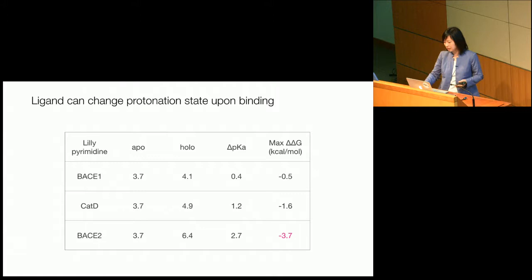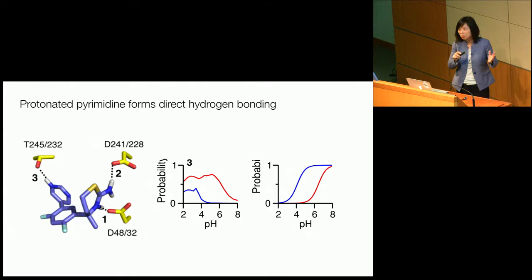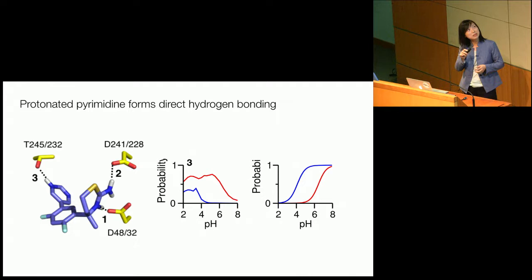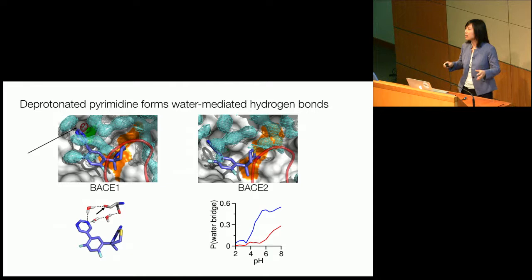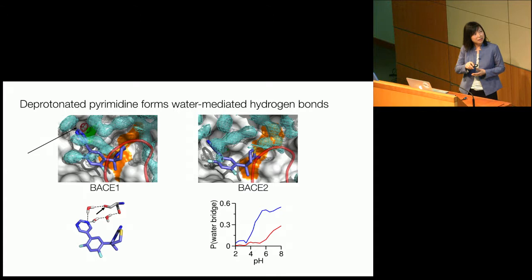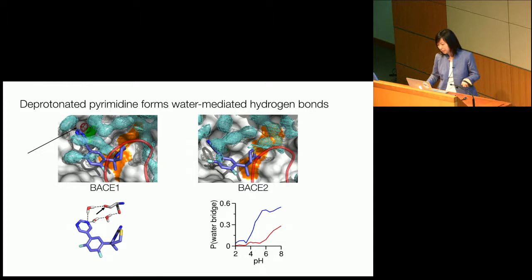Just to tease the audience: why does this happen? When the pyrimidine ring is charged or protonated, a direct hydrogen bond can be formed between the threonine and the site. However, when it's deprotonated — which is what we run in normal simulations — you have a water-bridged hydrogen bond between serine and the same pyrimidine site, with water molecules bridging the two sites. All this happens in a pH-modulated manner, and they offset each other: when protonated you have a direct hydrogen bond, when deprotonated you have the water-mediated hydrogen bond.